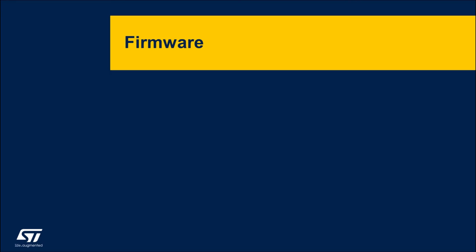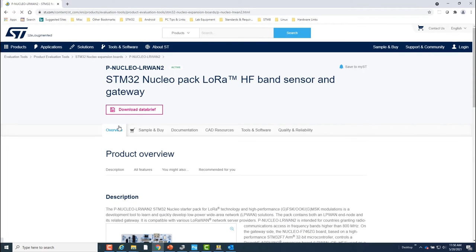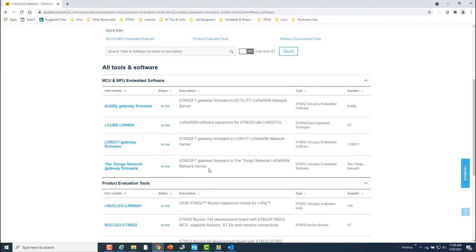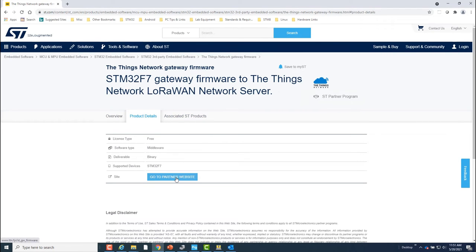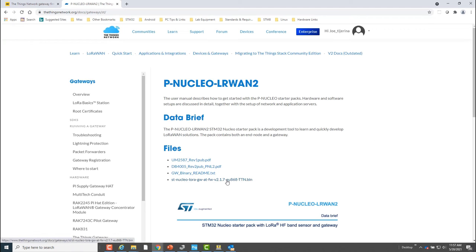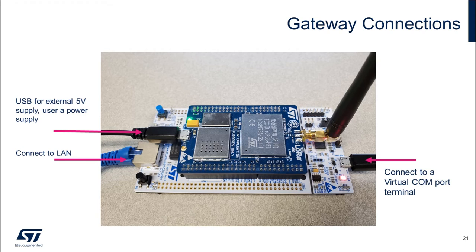Now I'll go over the firmware needed for the gateway and end devices. The PNucleo LoRaWAN gateway board needs to be programmed with the proper firmware. In this case, we want to program it with the Things Network firmware image — the link to the firmware image is available from ST.com. Note that the firmware is provided in binary form only and the source code is not made available. Once you connect the Nucleo STM32F7 board to a PC, the board should enumerate as an ST-Link debug device and a virtual COM port device. Also, now would be a good time to make the rest of the necessary connections. Power the blue RisingHF expansion board with a USB cable. With an Ethernet cable, connect the board to a LAN network. Make sure the antenna is connected to the RisingHF board — this one is included with the PNucleo LoRaWAN2 kit.